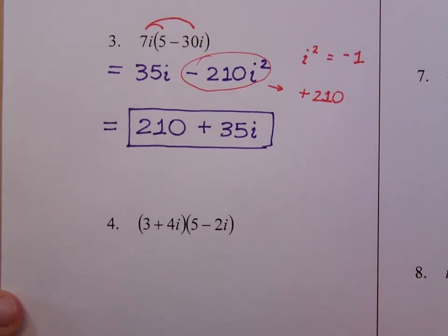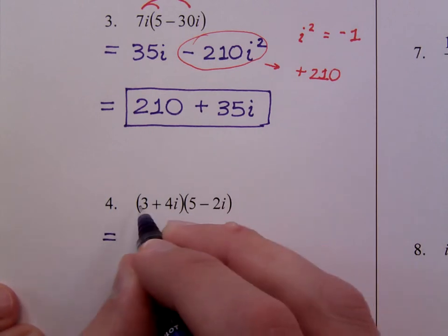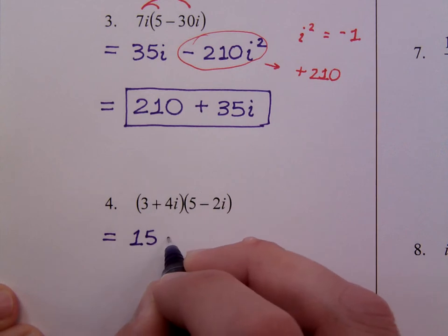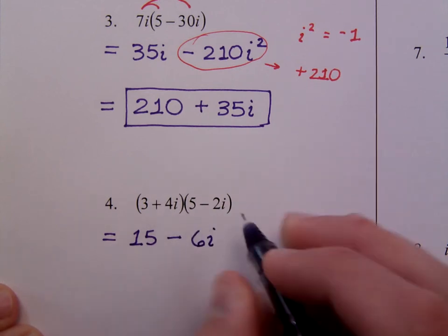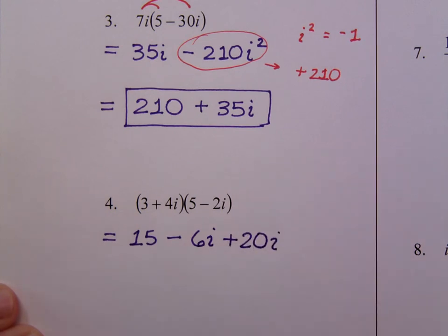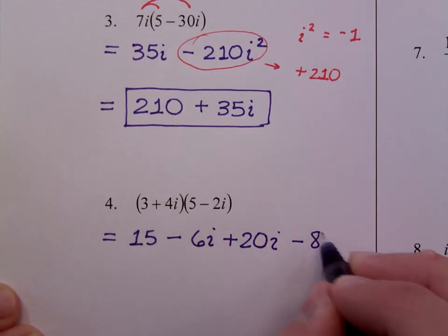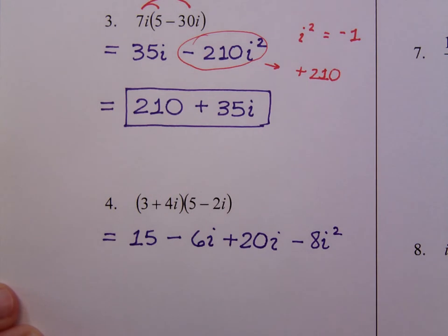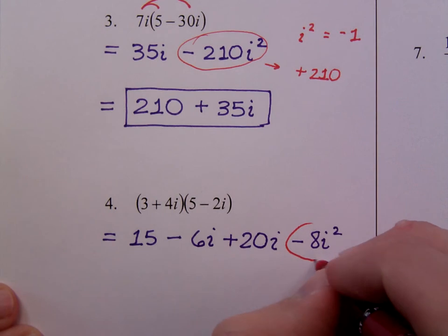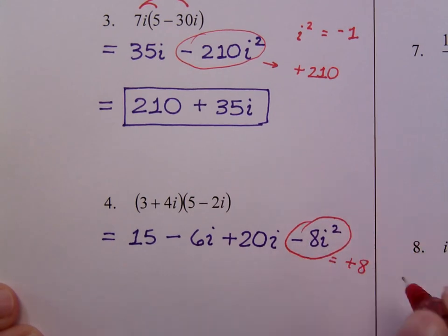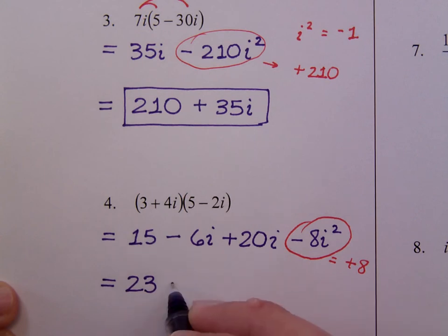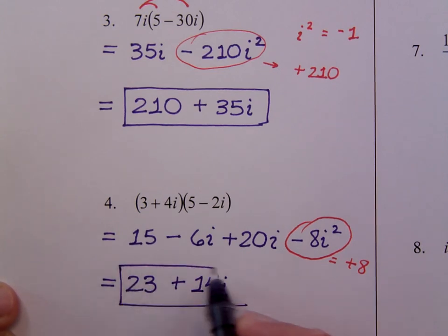And number 4. This is just an exercise in FOIL. So 3 times 5 is 15. 3 times negative 2i is negative 6i. 4i times 5 is 20i. 4i times negative 2i is negative 8i squared. Everything here looks pretty decent. This guy needs to transform into a positive 8. The negative from the i squared is going to make this guy a positive 8. So I put together the real stuff first. 15 and 8 is 23. Minus 6i plus 20i is positive 14i. So again, watch your signs. Make sure you know how to FOIL. And i squared is going to become a negative 1 factor.